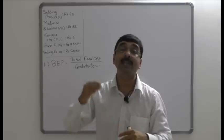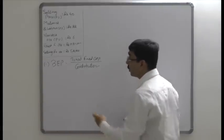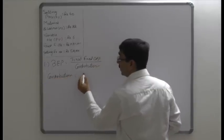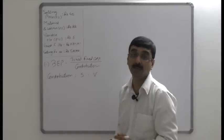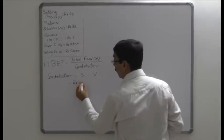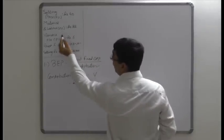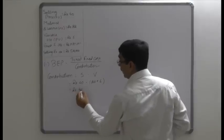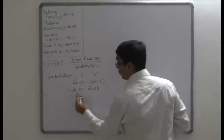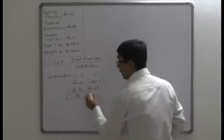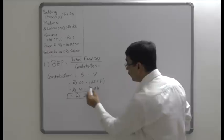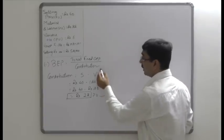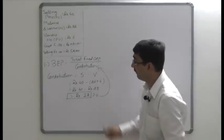Contribution is the position where variable cost is already considered but fixed cost is yet to be considered. The formula is: Contribution = S minus V, that means sales minus variable cost. Selling price is rupees 40 and variable cost is rupees 22 (material) plus rupees 6 (other variable overheads) = rupees 28. So contribution = 40 minus 28 = rupees 12 per unit.